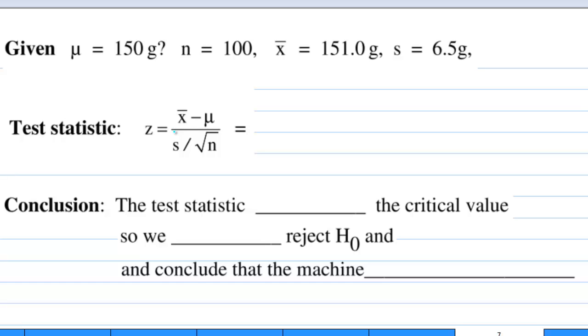Having established our critical region, the test statistic is z equal to x bar minus mu over s over square root n. Now, x bar is 151, mu is 150, s is 6.5, and n is 100. Calculate, this is 1.54.